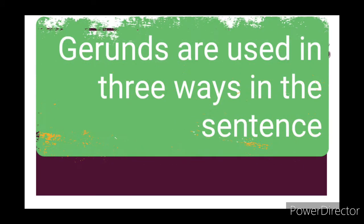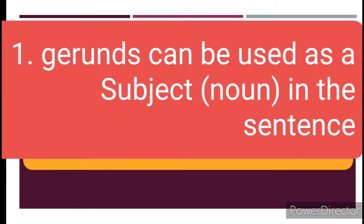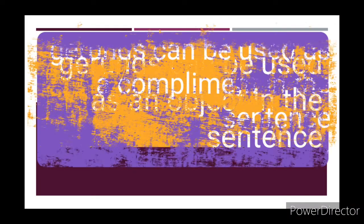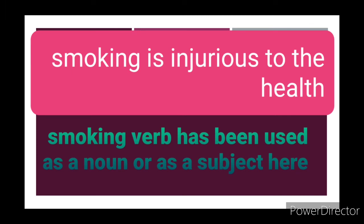There are three different ways in which a gerund can be used: gerund can act as a subject in the sentence; second, gerund can act as an object in the sentence; third, they are used as a complement of the 'to be' verb. For example: 'Smoking is injurious to health.' The word 'smoking' is used as a noun here — it is a gerund, an '-ing' form of a verb used as a noun. Similarly: 'Skipping is good for exercise.' 'Jumping is a good habit.'